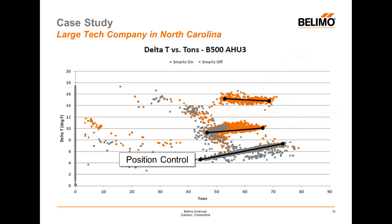The required loads were between 45 and 75 tons, and with position control mode in place, they were achieving Delta-Ts anywhere between 5 and 7 degrees Fahrenheit. On the subsequent time span, with the same valve on the same air handler, the energy valve was switched to flow control mode — a pressure-independent mode where each value of the control signal delivers a specific GPM of water to the coil. In similar load ranges, they were now achieving Delta-Ts in the neighborhood of 10 degrees Fahrenheit.